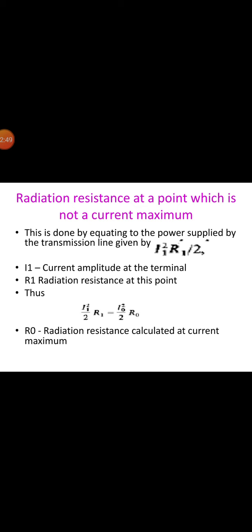However, R_0 can be easily transformed to the value which would appear across the terminals of the transmission line connected at the center of the antenna. This is done by equating the powers: I_1² * R_1 / 2 = I_0² * R_0 / 2, where I_1 is the current amplitude at the terminals and R_1 is the radiation resistance at that point. Therefore, R_1 = (I_0 / I_1)² * R_0. The current I_1 at a distance x from the nearest current maximum is given by I_1 = I_0 * cos(β*x).